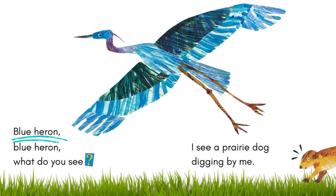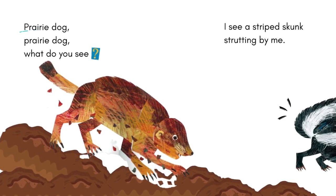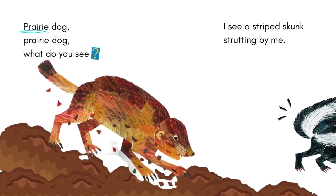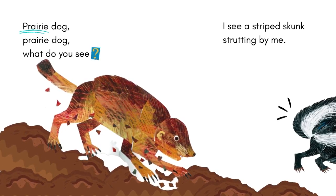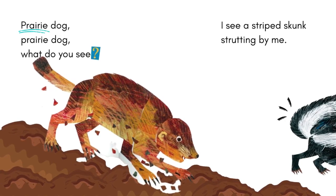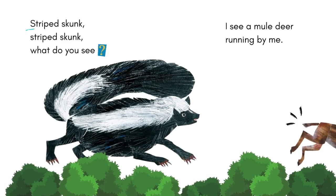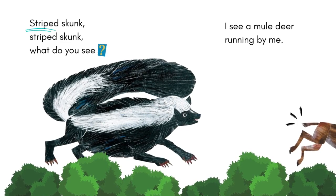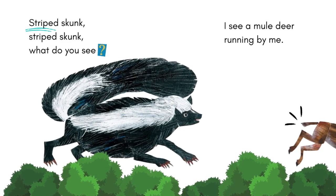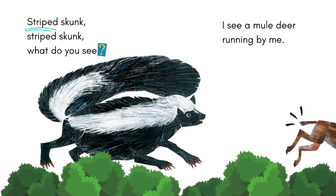Blue heron, blue heron, what do you see? I see a prairie dog digging by me. Prairie dog, prairie dog, what do you see? I see a striped skunk stretching by me. Striped skunk, striped skunk, what do you see? I see a mule deer running by me.